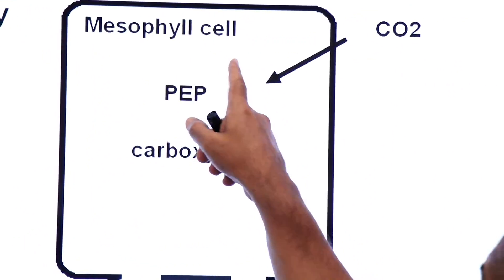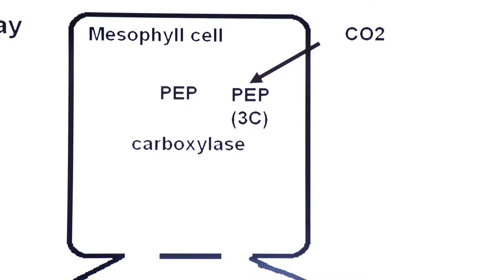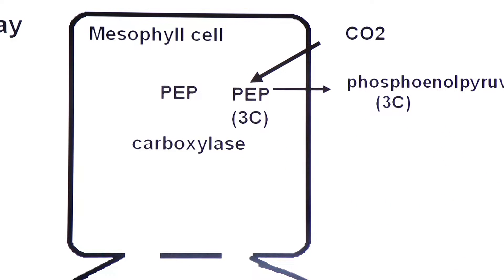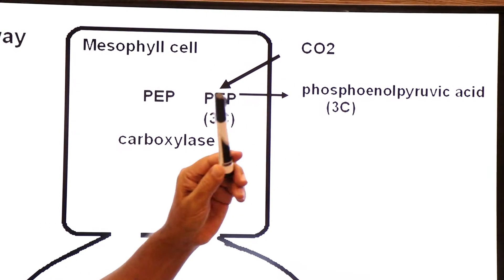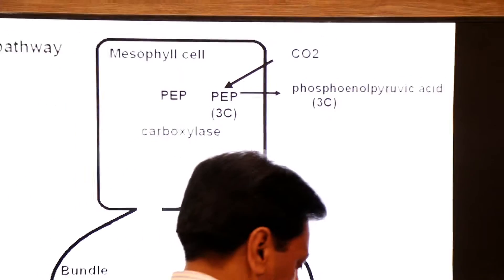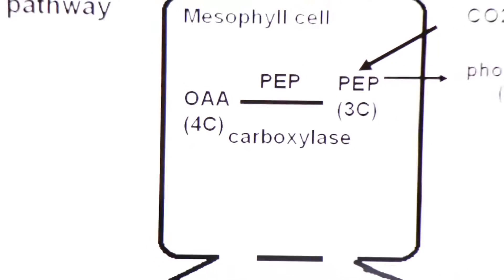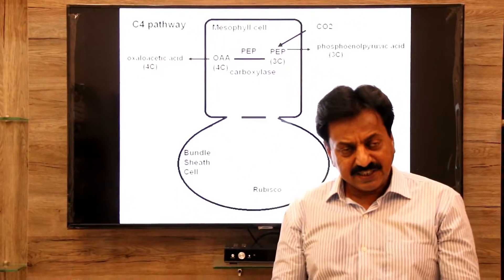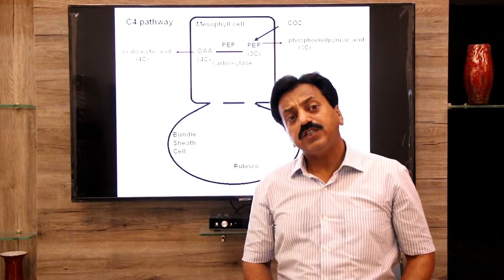Carbon dioxide enters the mesophyll cells of C4 plants. Here, this carbon dioxide is added to PEP — phosphoenolpyruvic acid, a 3-carbon compound — by PEP carboxylase. The first product we get in C4 plants is OAA — oxaloacetic acid — a 4-carbon compound. This is their initial product, which starts from the 4-carbon oxaloacetate, which is why they are called C4 plants.